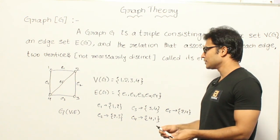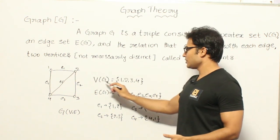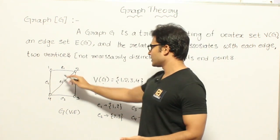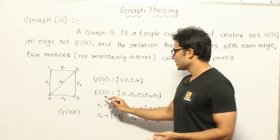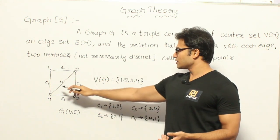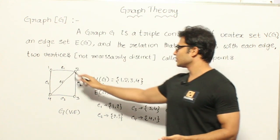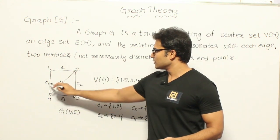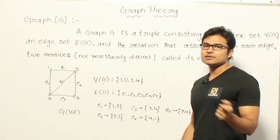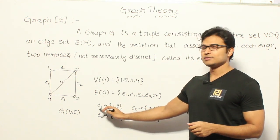To represent a graph you have to say what the vertices are. In this example the vertices are 1, 2, 3, 4. And what are the edges? In this case the edges are E1, E2, E3, E4, E5. And what is the relationship between the edges and the vertices?